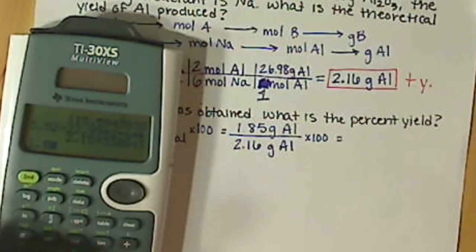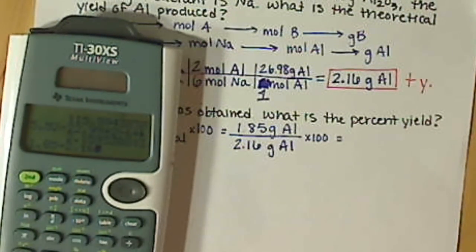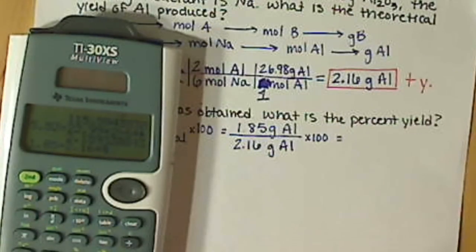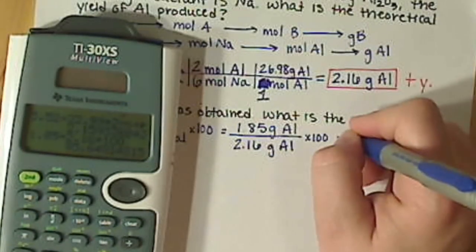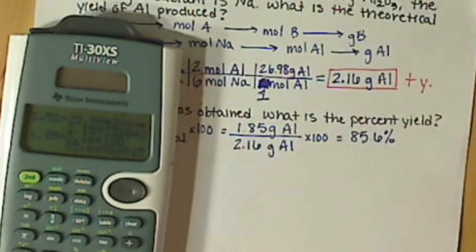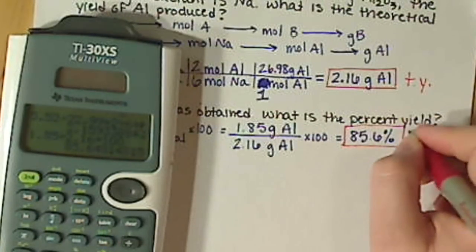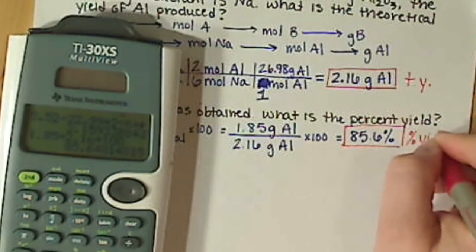So we multiply that by 100. So we have 1.85 divided by 2.16. We're going to multiply that by 100. Everything has three significant figures. So we want three significant figures in our percent. And so we have 85.6% yield. So this is our percent yield.